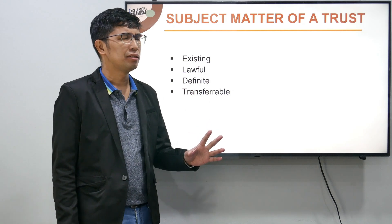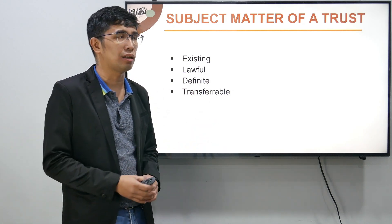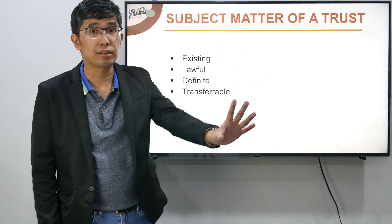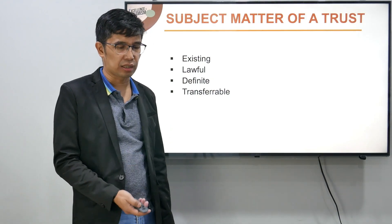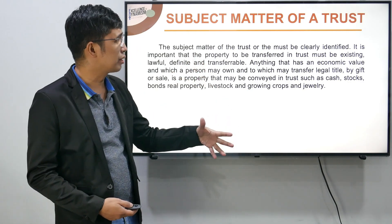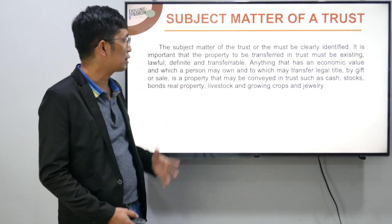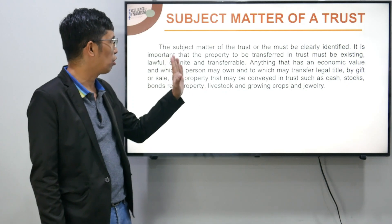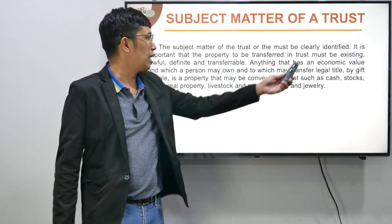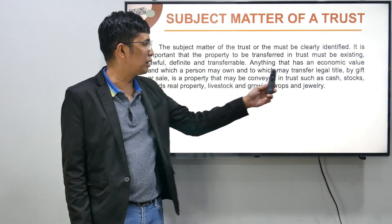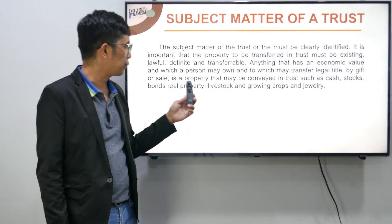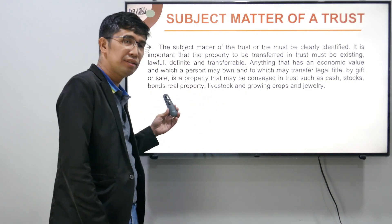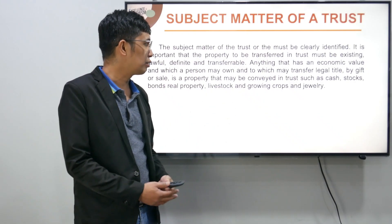Kasi sa trust agreement there is actually a transfer or a donation. Pansin, yung property na yun ay ipinagkaloob na doon sa bata, pero dahil bata pa lang siya, for the meantime it will be managed by other persons called trustee or fiduciary. The subject matter of the trust must be clearly identified. It is important that the property to be transferred in trust must be existing, lawful, definite, and transferable. Anything that has economic value and which a person may own and may transfer legal title by gift or sale is a property that may be conveyed in trust — such as cash, shares of stocks, bonds, real property, livestock, growing crops, and jewelry.